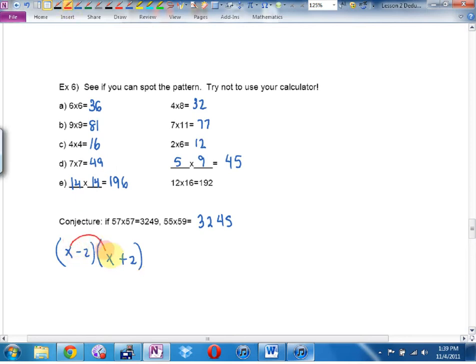Oh, let's FOIL this out. What is x minus 2 times x plus 2? And I'll get x squared. I'll get plus 2x. I'll get minus 2x. I'll get minus 4. In fact, I get x squared minus 4.